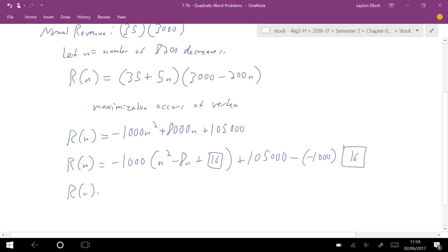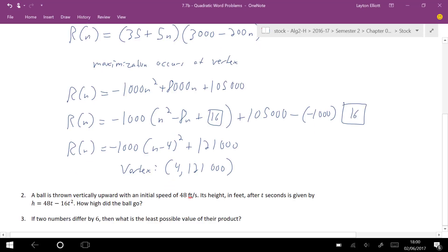So my R(N) is negative 1,000 times (N minus 4) squared plus this is going to be 105,000 plus 1,000. So this is going to be 121,000. So my vertex is now at (4, 121000), which I'm just going to put without a comma because that's going to be confusing with the comma and the ordered pair. So that's the vertex.